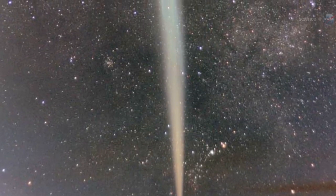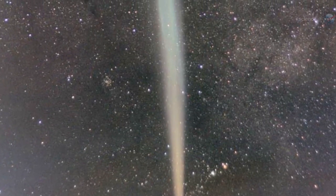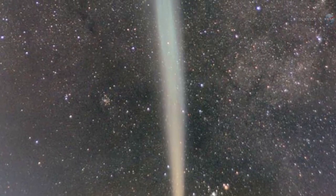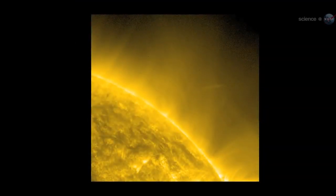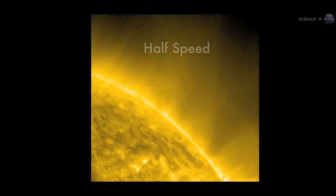When December 16 came, however, Comet Lovejoy shocked us all, says Battams. It survived, and even flourished. Images from NASA's Solar Dynamics Observatory showed the comet vaporizing furiously as it entered the Sun's atmosphere, apparently on the verge of obliteration. Yet Comet Lovejoy was still intact when it emerged on the other side.